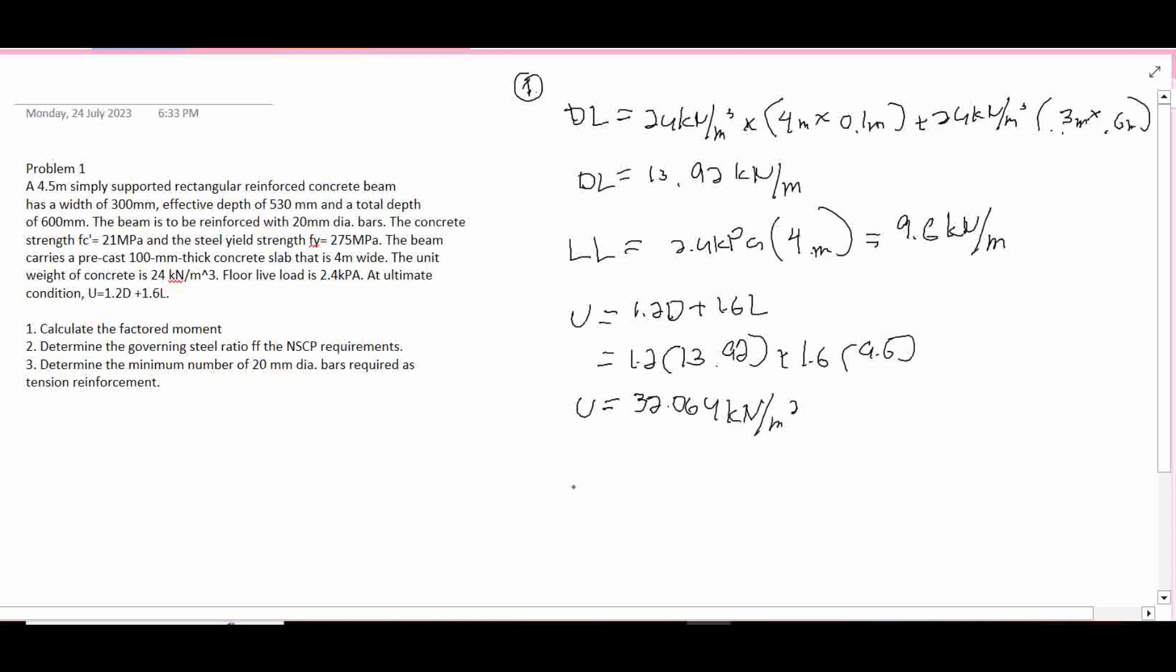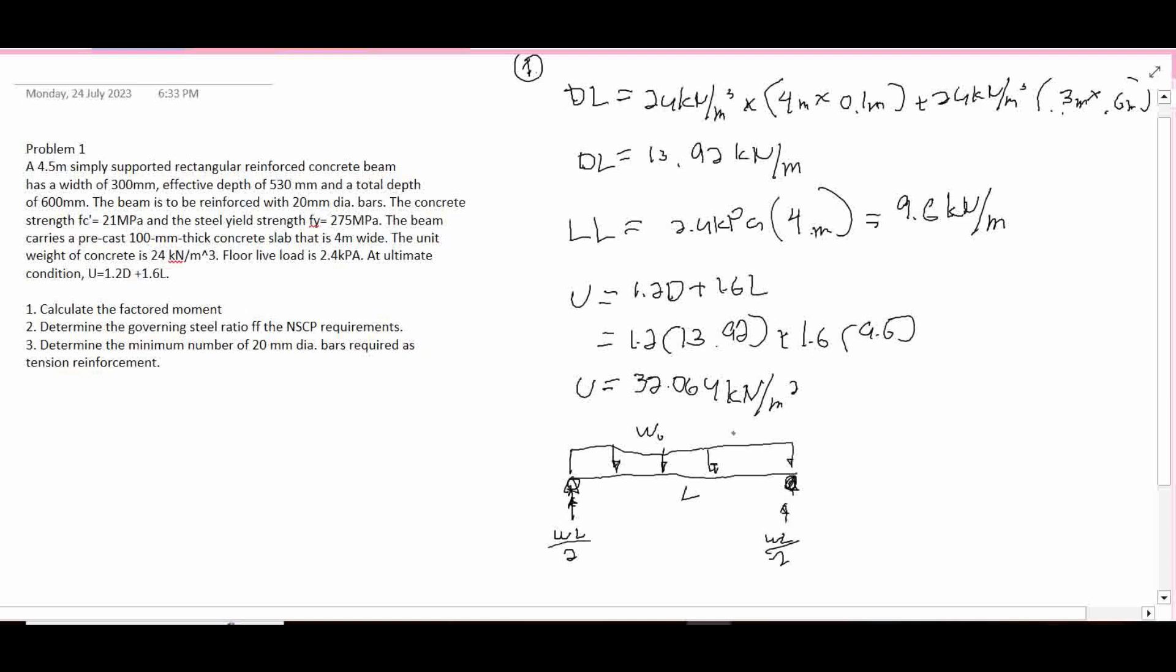So this will be our figure, this is our simply supported beam, pin and roller, with uniformly distributed load W. This one will be W times the length of the beam divided by 2, and so as to this one. In order to come up with the ultimate moment, the maximum moment in a distributed beam will occur in the mid-span.